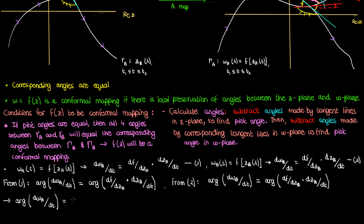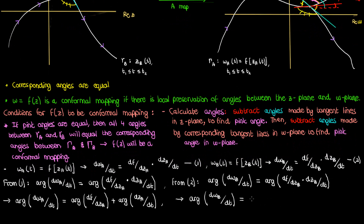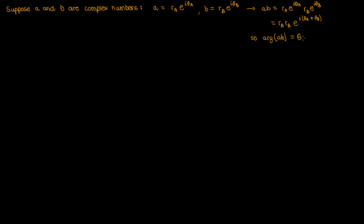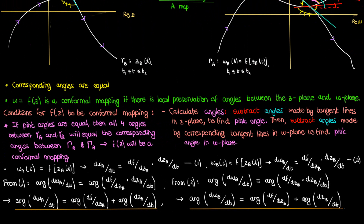The argument of the product of two complex numbers is the sum of the arguments, so we can break down the argument of products in these two equations to the sum of the arguments of the individual factors. Say I have two complex numbers a and b. a has an argument of theta_a, so it looks like this when I write it in exponential form, while b has an argument of theta_b, so it looks like this in exponential form. If I multiply a and b, since the product of the exponentials is just the sum of the exponents, I can simplify this product to show that the argument of the product is just the sum of theta_a and theta_b — the sum of the original arguments. And that's why I broke up the argument of the product on the right-hand side to the sum of the individual arguments.